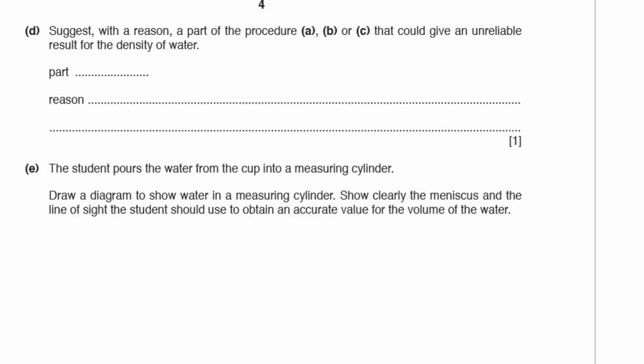Part D. Suggest, with a reason, a part of the procedure A, B or C that could give an unreliable result for the density of water. There's a few difficulties with each of them. If I go for part A, I've drawn the base of the cup and measure that, but I don't take into account the thickness of the cup. How can I calculate the density of the water in the cup if I'm including the volume of the cup in the calculation? I could choose B because it's difficult to measure the height in practice. Or I could choose part C because the mass of the cup is ignored when the whole thing is weighed.